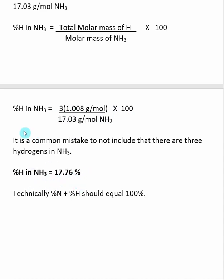What we get is that the percent hydrogen inside of NH₃ is 17.76%, and that tells me that 17.76% of the molar mass of NH₃ is due to hydrogen. It is a very common mistake to forget to multiply by three in this case — it's very common to just put the atomic weight of whatever element we're dealing with. But we have to remember that we need to include the total number of each element inside of the molecular formula. Because there were three hydrogens inside of NH₃, I needed to multiply the atomic weight of hydrogen by three to give the total mass of hydrogen inside of NH₃.